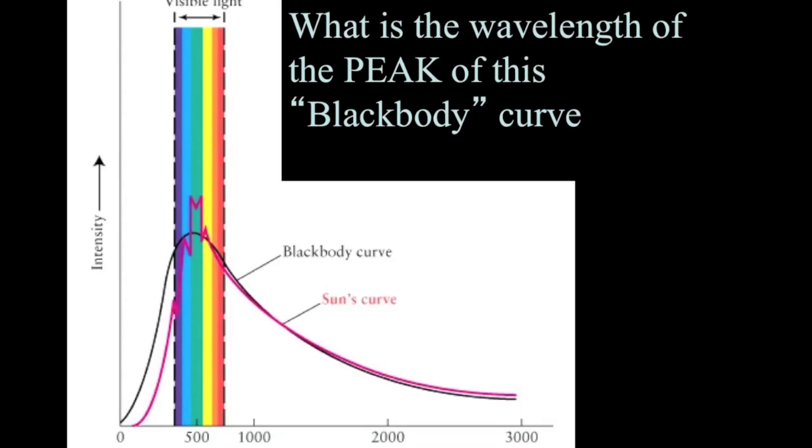So here's a blackbody curve. It corresponds to the spectral curve for the sun. And the question we can ask first is, what is the wavelength of the peak of this blackbody curve? The wavelength is on the x-axis, and so if we look at the peak of the curve, it looks like it's somewhere in the middle of the visible light spectrum. That's somewhere about 450 to 500 nanometers in wavelength.